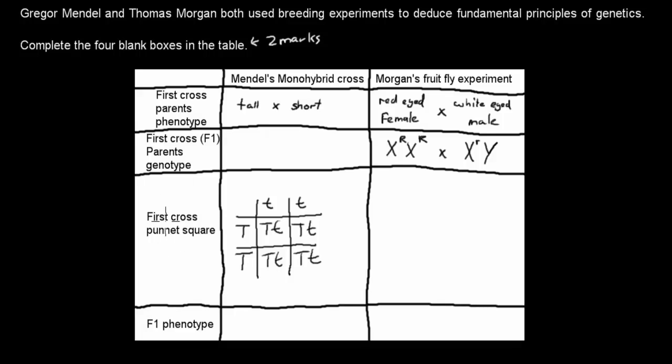We've got the first cross Punnett square here and it's giving us genotypes. The tall parent was this and the short parent was this. So we know that one parent to make the F1 generation was TT, capital T's, which is homozygous tall. The other was two small t's, which is homozygous short. That's our first part, gets you half a mark.